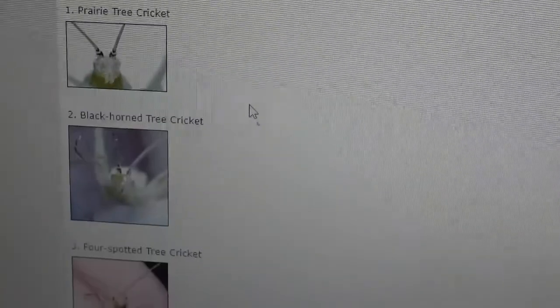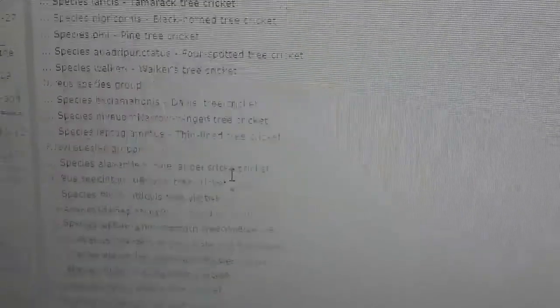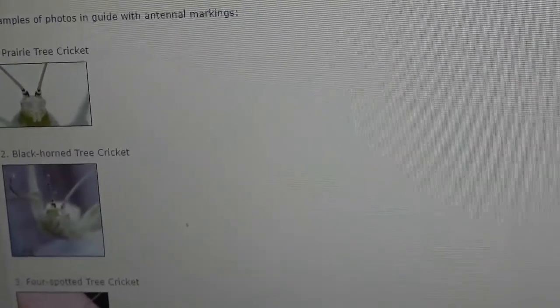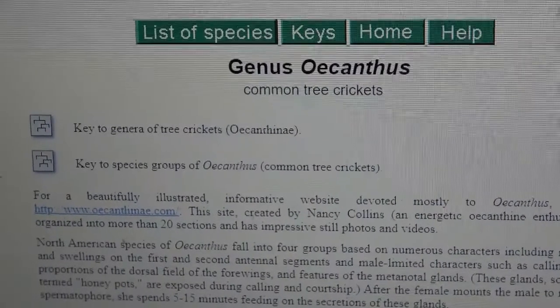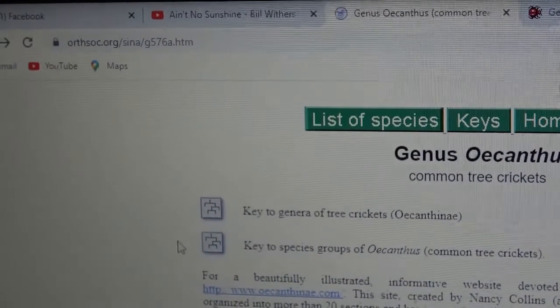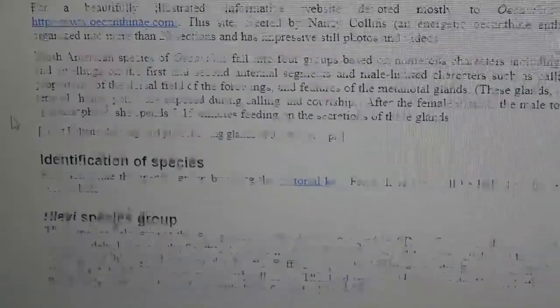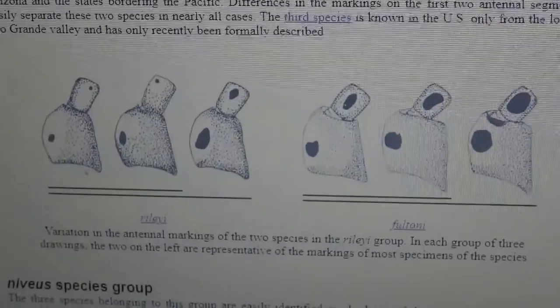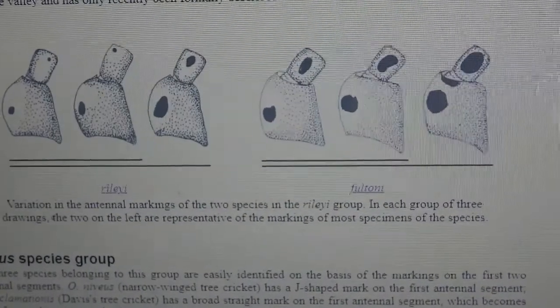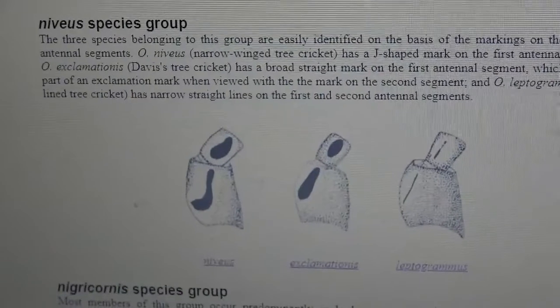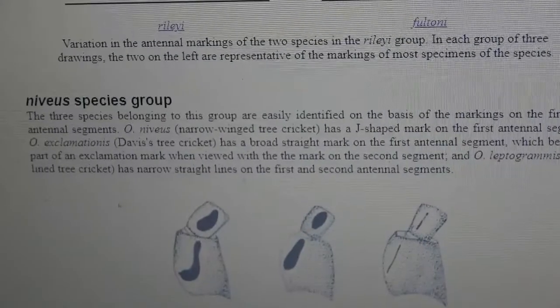On BugGuide they actually have pictures of live specimens showing the markings on the antenna, just to help a little. And this other page on orthsoc.org has more information and more close-up differences showing a couple of the species groups within the genus.